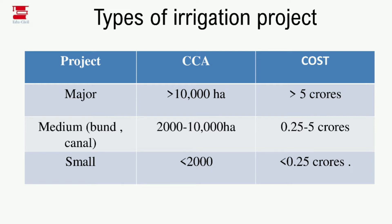Major, Medium, and Small classifications. The major project has a Cultural Command Area (CCA) greater than 10,000 hectares, and a cost greater than 5 crores. The medium project falls in between.